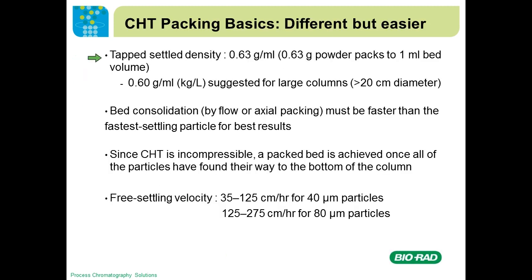A few packing basics. The tap settle density is 0.63 grams per ml. This means that if you weigh out one gram of CHT, put it into a graduated cylinder, and tap until all particles settle to maximum packing density, you get about 0.63 grams per ml. So 0.63 grams of powder will pack to one ml bed volume, meaning if you buy a kilogram of CHT, you're getting more than one liter of packed resin. However, we recommend a packing density of about 0.60 grams per ml for columns 20 centimeters or larger in diameter.